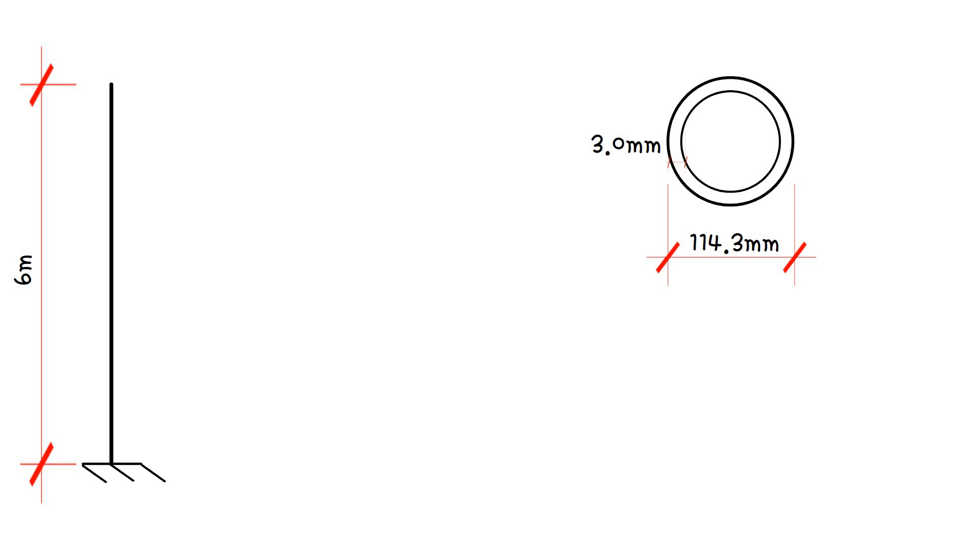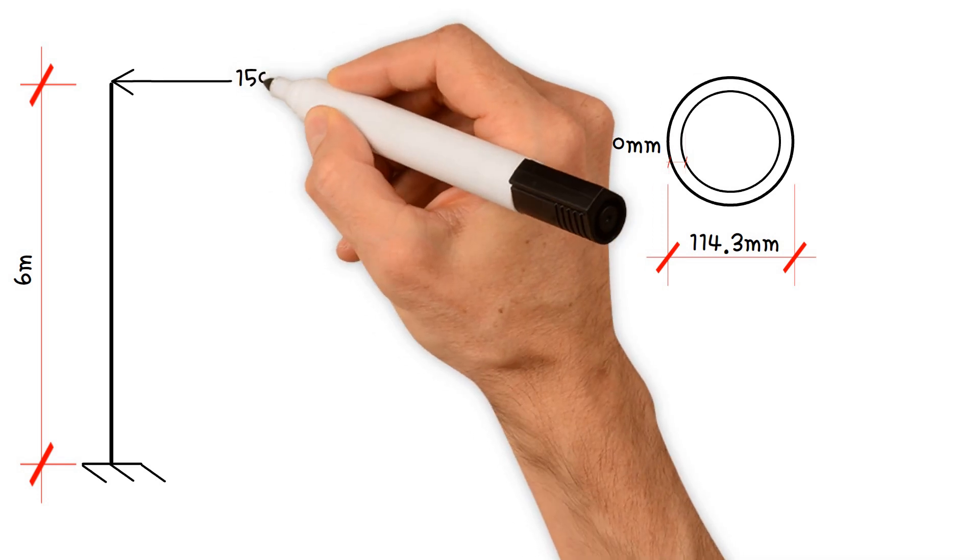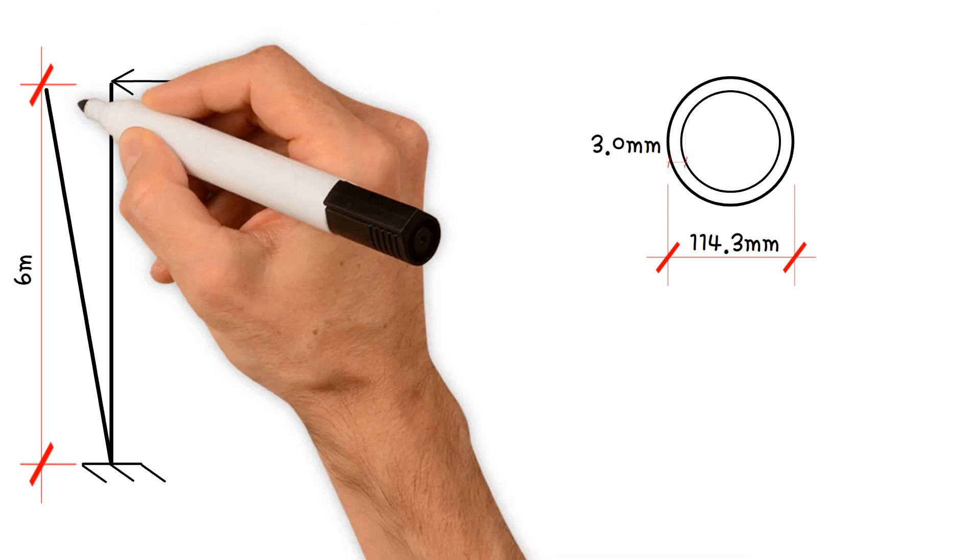In high wind a flag can be considered to produce a horizontal point load at the top of the pole of 150 newton. How much does the top of the pole deflect?